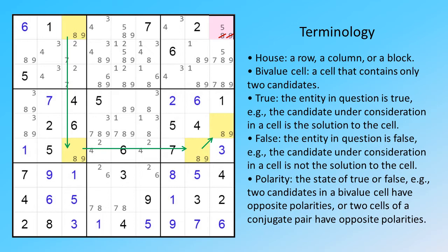True: the entity in question is true. For example, the candidate under consideration in a cell is the solution to the cell. False: the entity in question is false. For example, the candidate under consideration in a cell is not the solution to the cell.